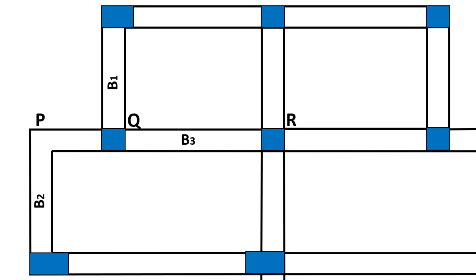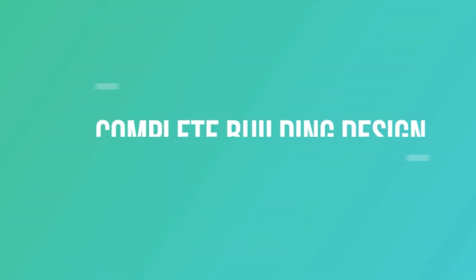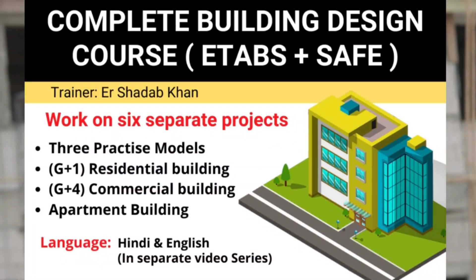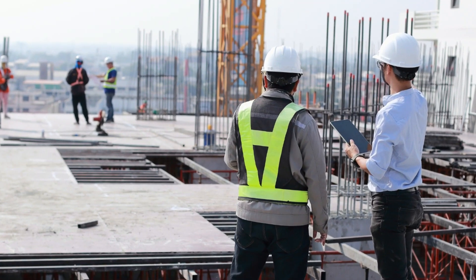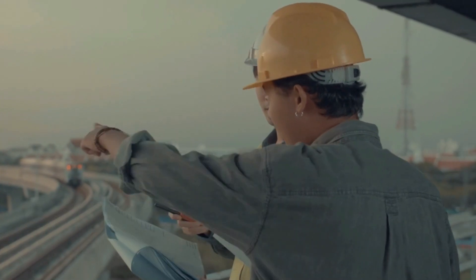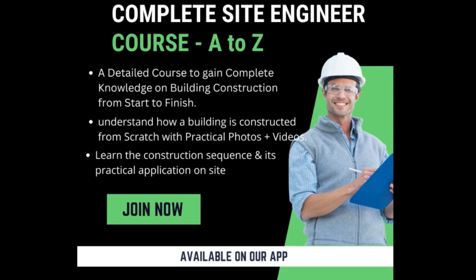So, this was all about this lecture. You can check out the complete building design combo course on E-Tabs and SAFE, wherein you will get to work on six separate models in E-Tabs and the complete foundation design in SAFE. Again, if you want to develop the proper skill set required for a site engineer without going to the site, then you can enroll in our complete site engineer course, which is available in both Hindi and English. The link of the courses will be provided in the description box of this video. Thank you.